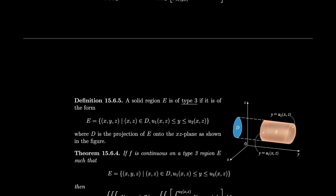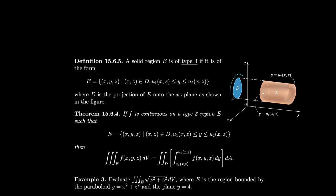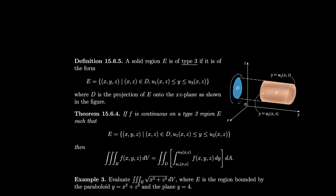For a type 3 solid region projecting into the xz-plane, we have y = functions of x and z, so we integrate with respect to y first. Then dA is determined by whether the plane region is type I or type II. If type I, z = functions of x in top and bottom, so we go z next, then x. If type II, x = functions of z on left and right, so we go x next, then z last.